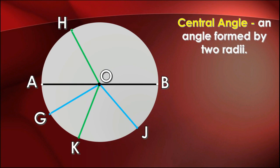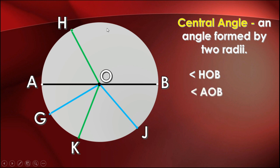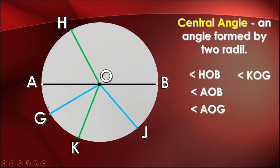A central angle is an angle formed by two radii. Examples of central angles include angle HOB, angle AOB, angle AOG, angle KOG, and angle JOG.